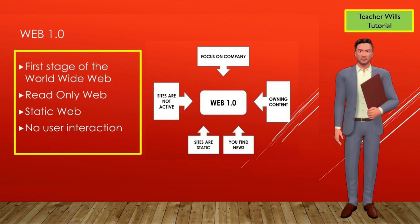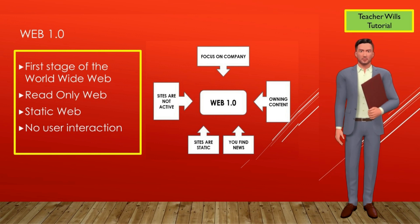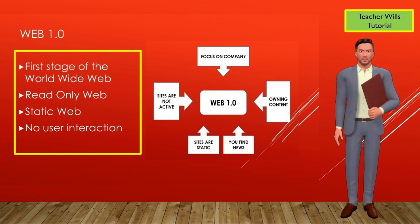Web pages in Web 1.0 were static, meaning you could read and look at photos, but users could not interact with them to obtain more information. Feedback was only possible through private email, and direct comments were not available. That is why Web 1.0 is also known as the static web.